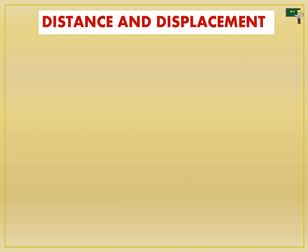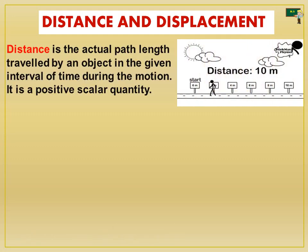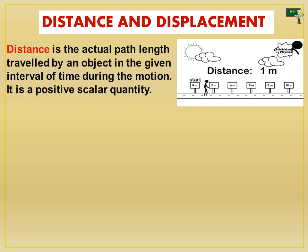Let's see distance and displacement. Usually, in your lower classes, you would have learned about distance. But let me explain in a slightly different way. Distance is the actual path length traveled by an object in the given interval of time during the motion. It is a positive scalar quantity which does not have any direction.